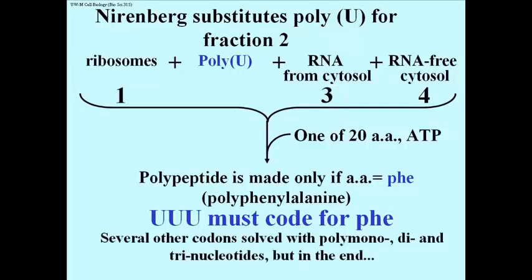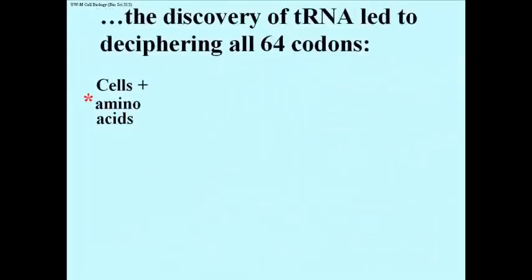Nirenberg and his colleagues deciphered several other codons, the other polymononucleotides, as well as polydinucleotides, and even polytrinucleotides. But that became pretty tedious after a while, and Marshall Nirenberg hit upon a method to decipher all 64 codons in record time.